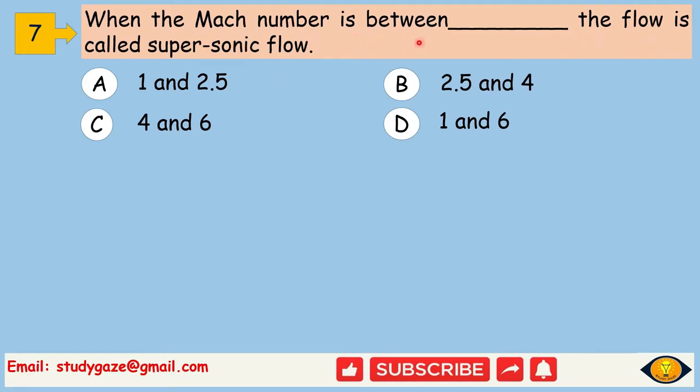When the Mach number is between 1 and 6, the flow is called supersonic flow.